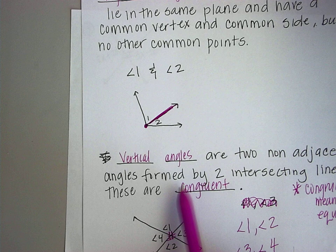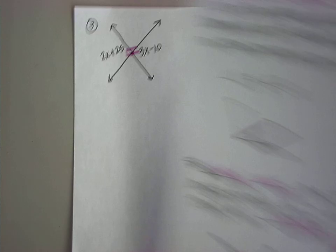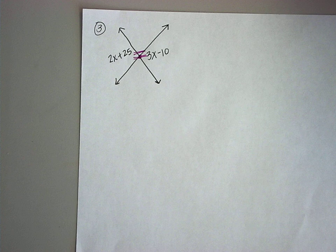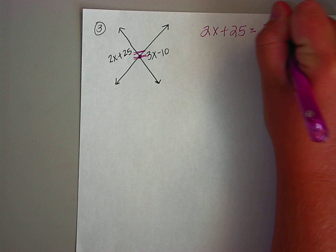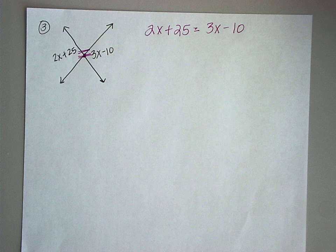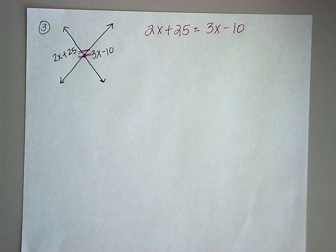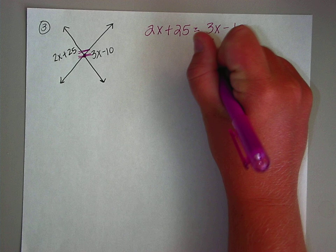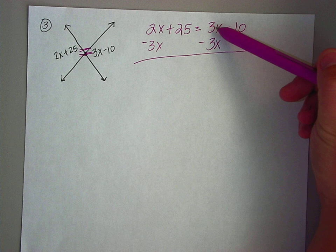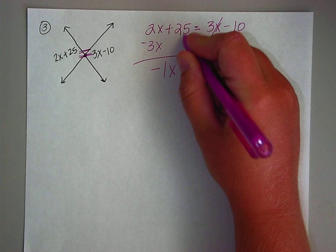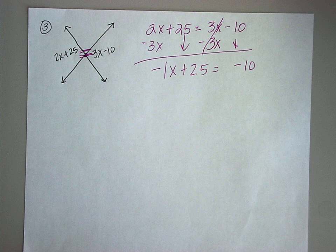Looking back at our notes, vertical angles are congruent, and congruent means they are equal. So we know 2x plus 25 equals 3x minus 10. We have no common terms on either side, so we have to move x's to one side and numbers to the other. Subtract 3x from both sides — this cancels, and 2x minus 3x gives us negative 1x. Bring everything else down.